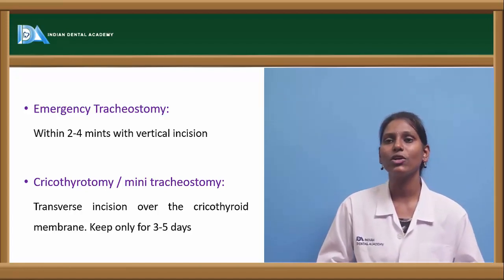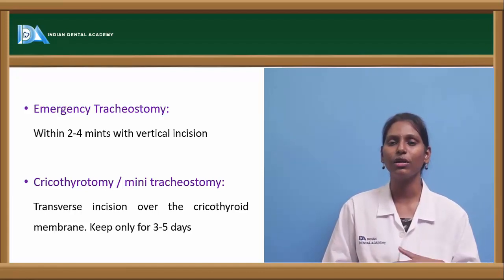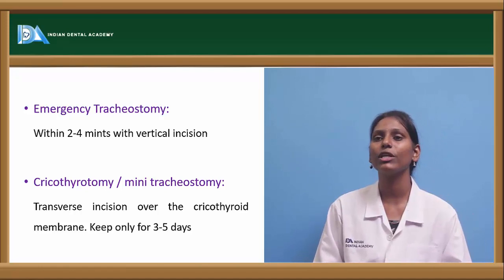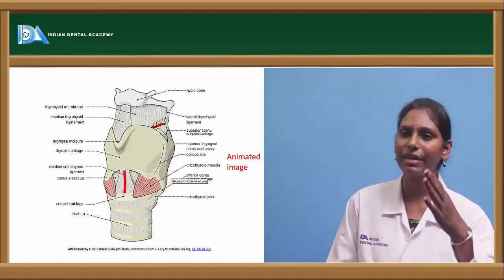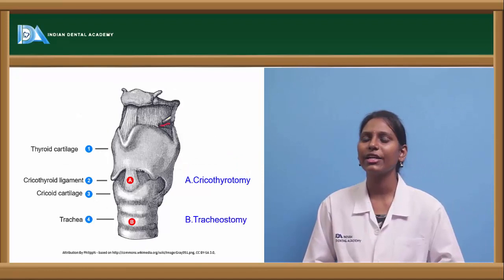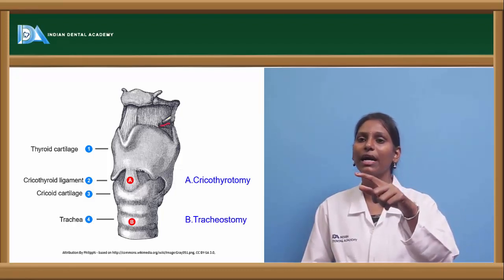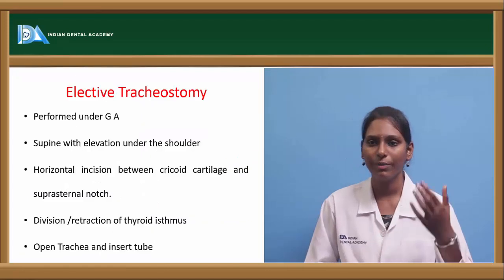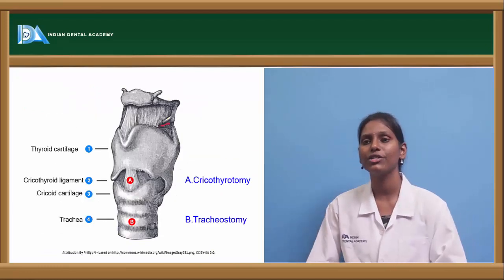There is also cricothyrotomy, or mini tracheostomy, where a transverse incision is given over the cricothyroid membrane. This is usually kept for only three to five days, used for minor surgical procedures requiring artificial ventilation for a short period. In the animated image, we can see the median cricothyroid ligament being incised, and the position of the tracheostomy below the cricoid cartilage at the cricothyroid ligament.